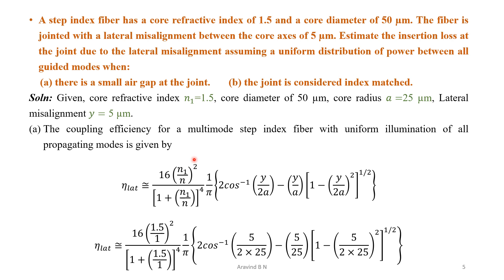Let us go through a problem related to it. A step index fiber has a core refractive index of 1.5 and a core diameter of 50 micrometers. The fiber is jointed with a lateral misalignment between the core axes of 5 micrometers. Estimate the insertion loss at the joint due to lateral misalignment assuming a uniform distribution of power between all guided modes: (A) when there is a small air gap at the joint, and (B) when the joint is considered index matched.